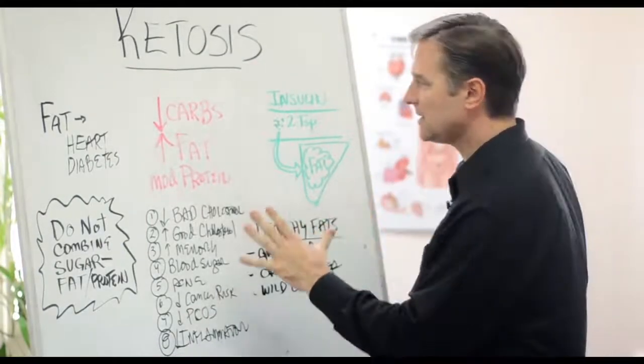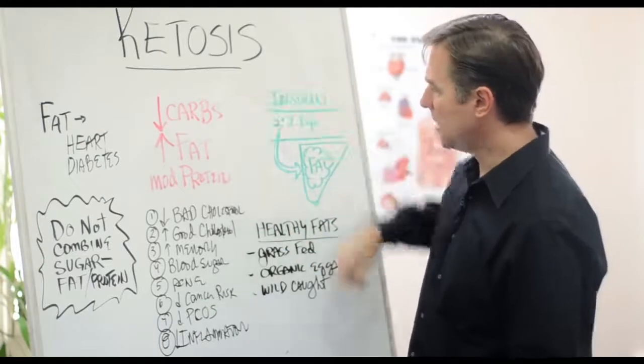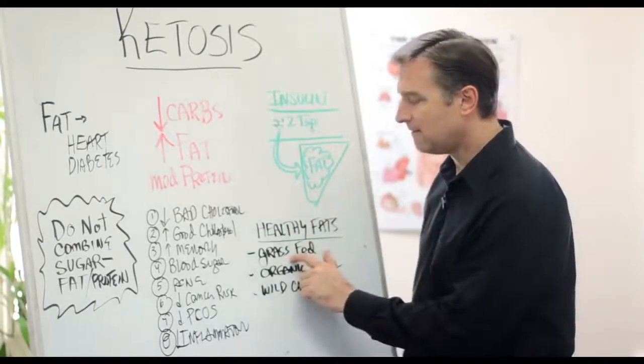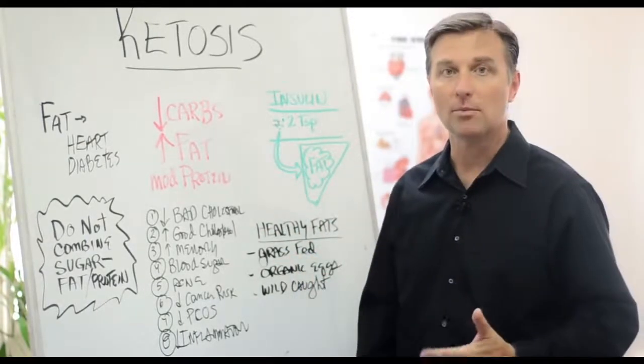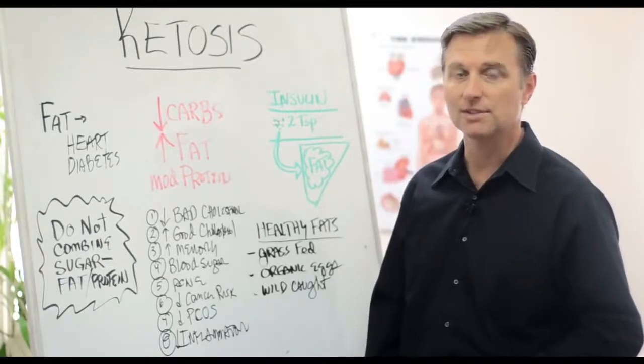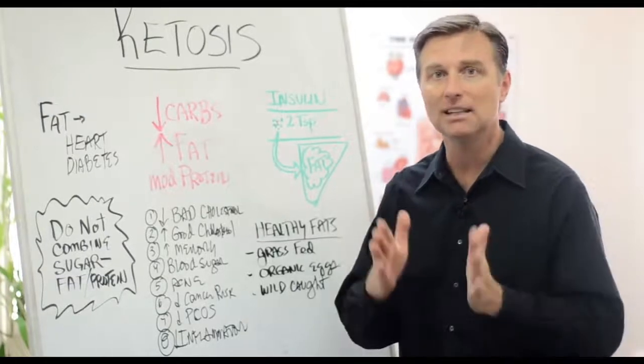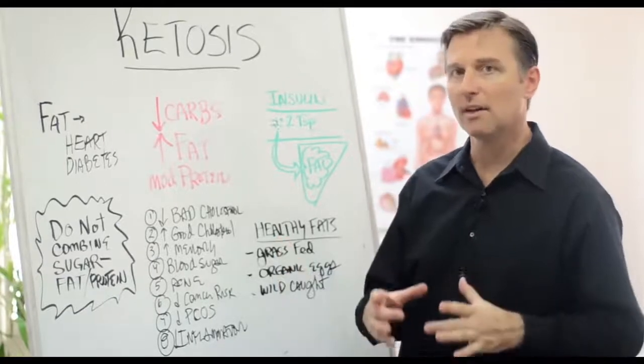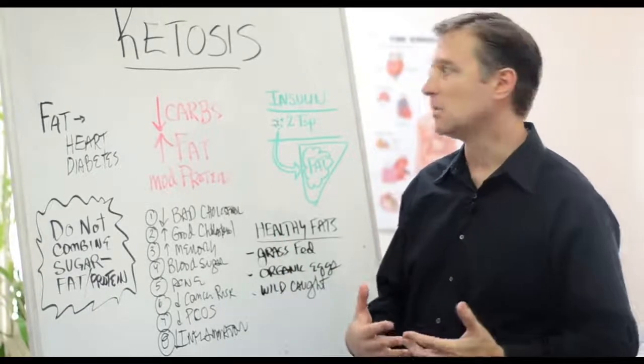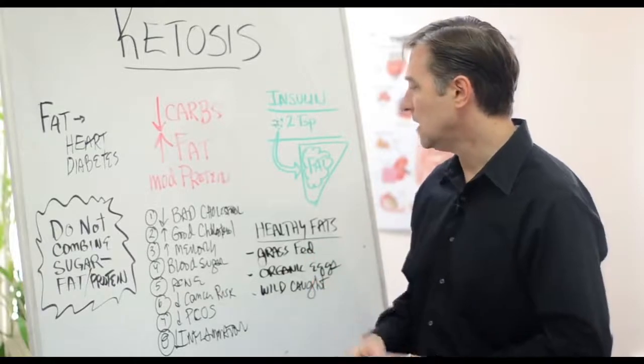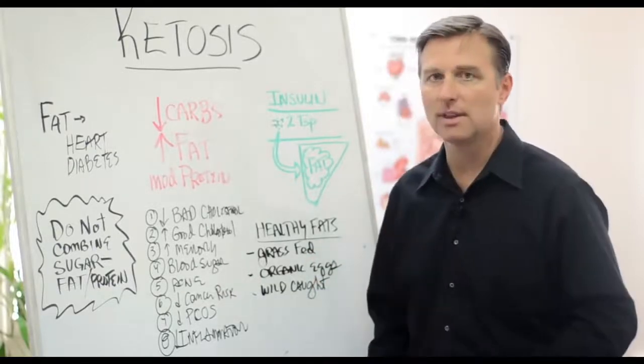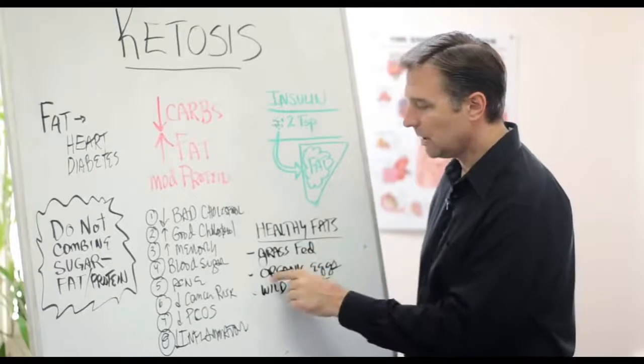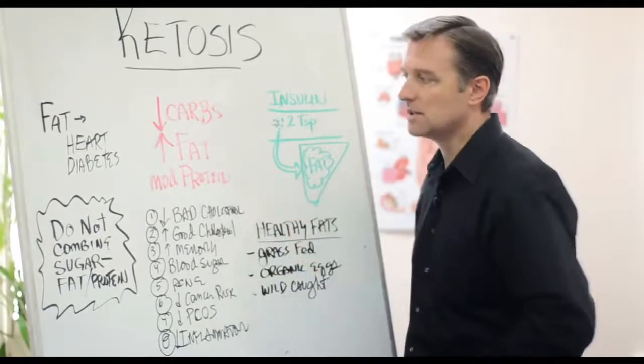The healthy fats that you need to be on are basically grass-fed animal products like beef or something like that. Do not consume the lean beefs or the turkey bacon or the chicken without the skin. Why? Because we need those healthy fats. Do not eat eggs without the yolks. We need that fat to be able to get you in ketosis.